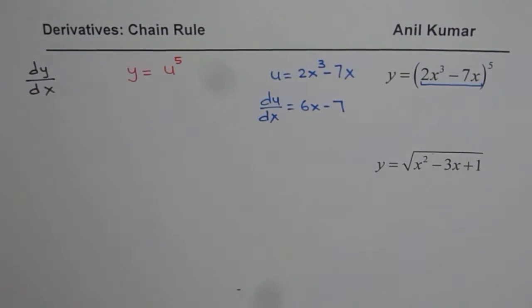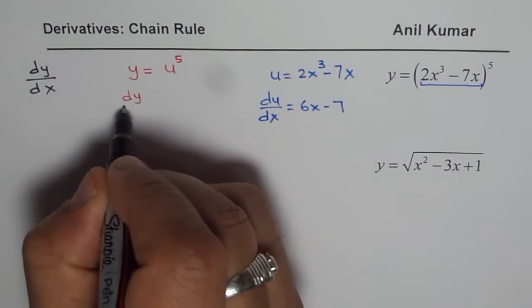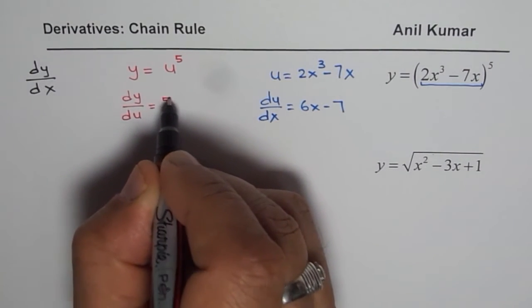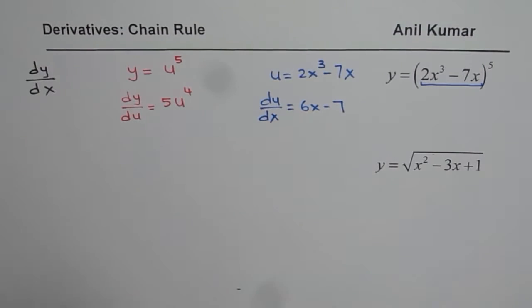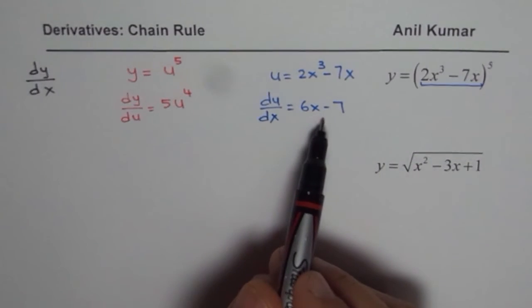How about the derivative of y with respect to u? dy/du will be equal to 5, power rule, u⁴. So that is how we can apply the derivative for each individually.